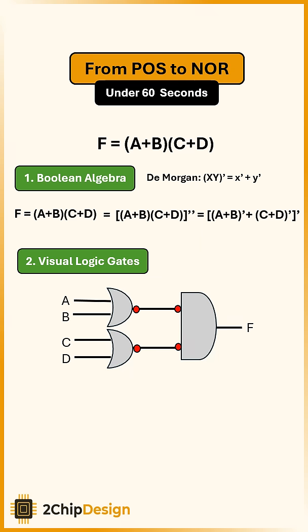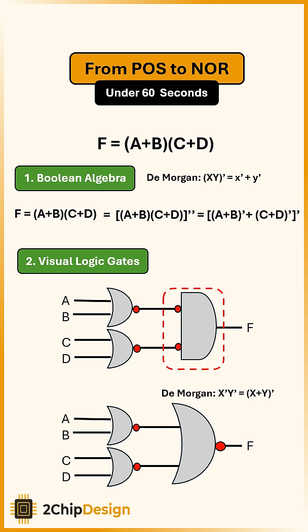Finally, by applying De Morgan again, that NOT-ed AND gate becomes another NOR gate. And that's how we transformed the product of sums form into a complete NOR based circuit.